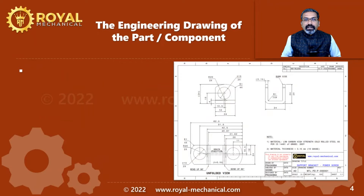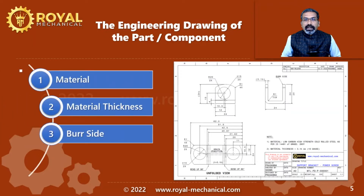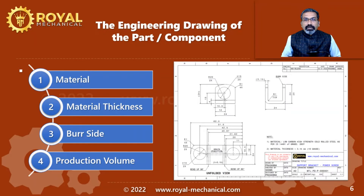What you are seeing on the screen is the engineering drawing of the power screw support bracket of a car scissor jack. As you are aware, we are designing the blanking die for this component. The part information like the material, the material thickness, and the burr side is available on this engineering drawing. However, for the production volume requirements we will have to check with the head of the department or our supervisor.